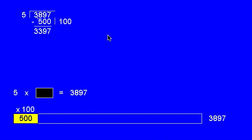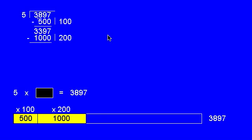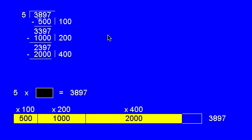And if 100 multiples are 500, 200 multiples are going to be 1,000. That leaves 2397. And if 200 multiples are 1,000, 400 multiples are going to be 2,000, leaving 397.